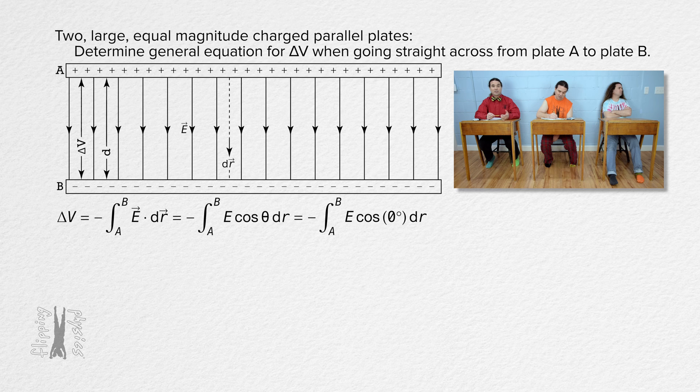The cosine of zero degrees is one and actually the electric field is constant from plate A to plate B so we can take that out from under the integral. And the integral from plate A to plate B with respect to position is the distance between the two plates, which we have labeled d.